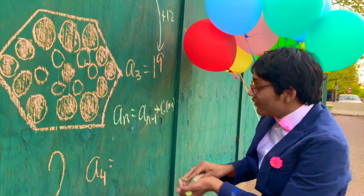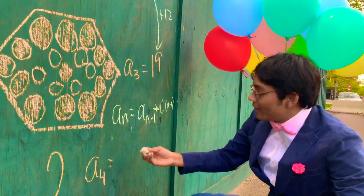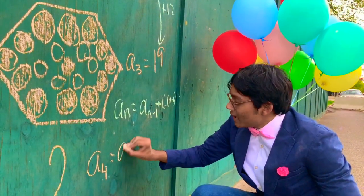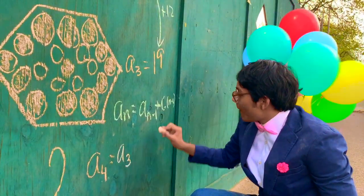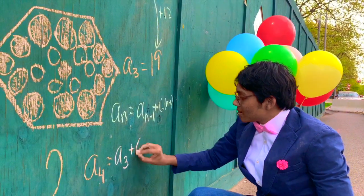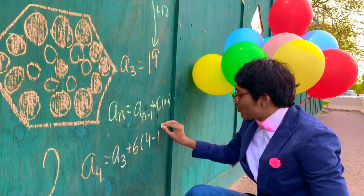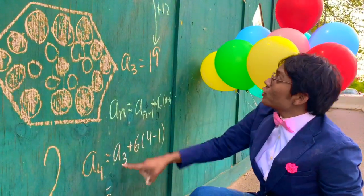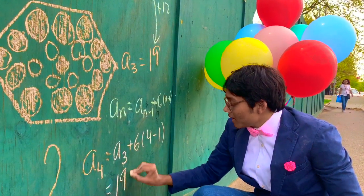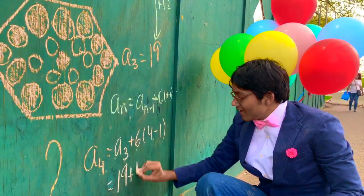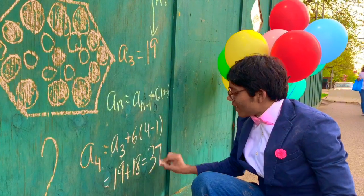And so now we can use that formula to go ahead and just plug in 4 for n. So a sub n minus 1 is a sub 3 plus 6 times 4 minus 1. And so go ahead and simplify that. What is a sub 3? That's 19 plus 6 times 3, that's just going to be 18. So 19 plus 18 is 37.